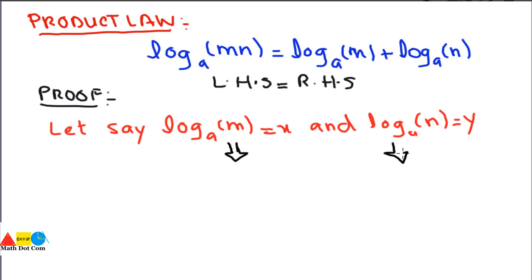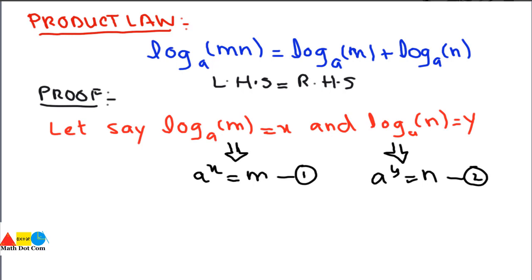As we have seen in previous lectures, converting log form into exponential form gives us: a raised to power x equals m, and a raised to power y equals n. These are the two equations formed from our assumptions. We now multiply these exponential forms together.